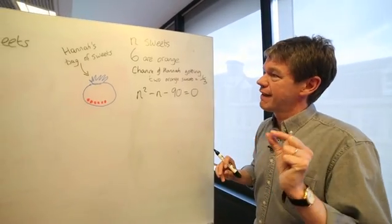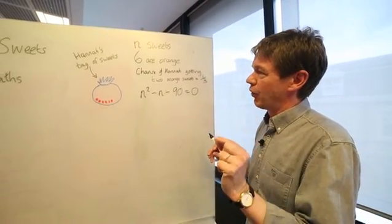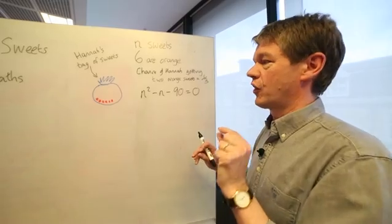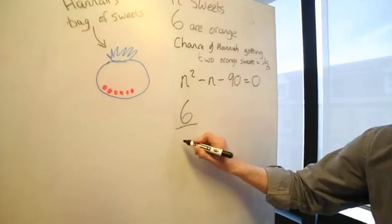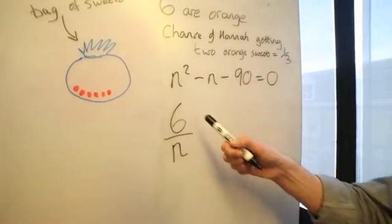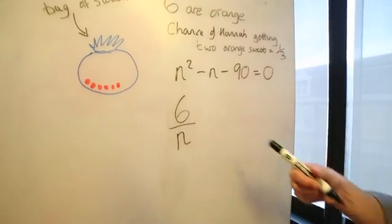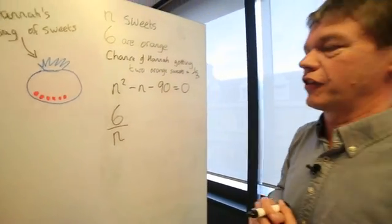And the first thing that we're told is that she takes out an orange sweet. What was the chance of that happening? Well, the chance of it happening is six divided by N. There are six sweets out of N. So it's a fraction. There's a six out of N chance of getting an orange sweet.